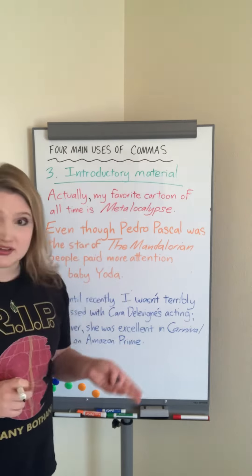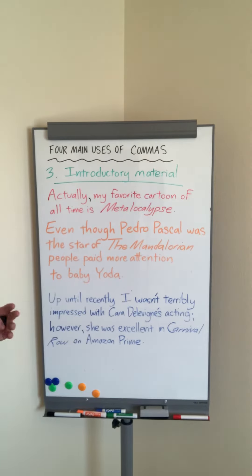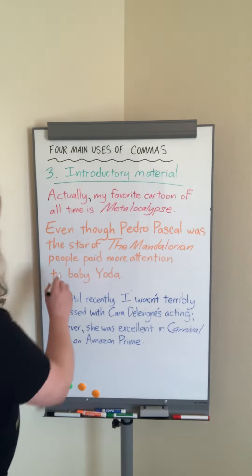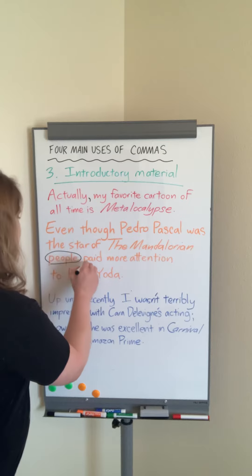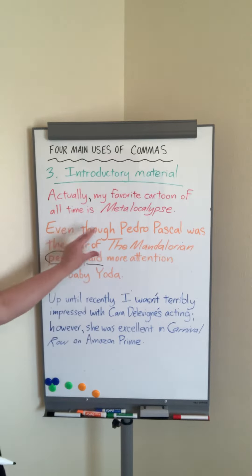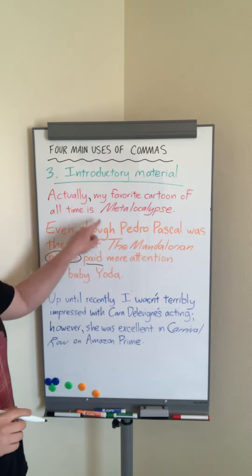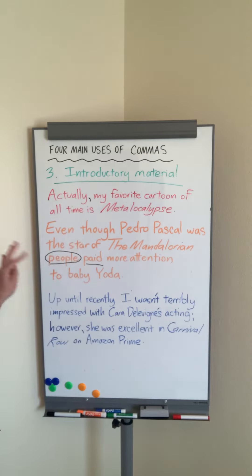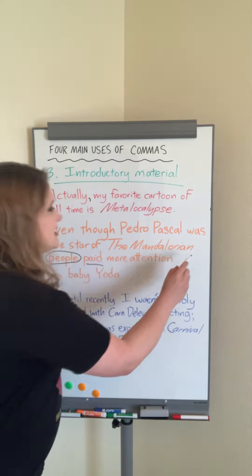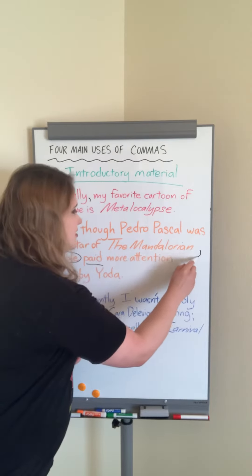This next example has a whole dependent clause in front: 'Even though Pedro Pascal was the star of The Mandalorian, people paid more attention to Baby Yoda.' The independent clause is 'people paid more attention to Baby Yoda,' and 'even though' is a subordinating conjunction that makes the first part dependent. So that dependent clause needs a comma after it.